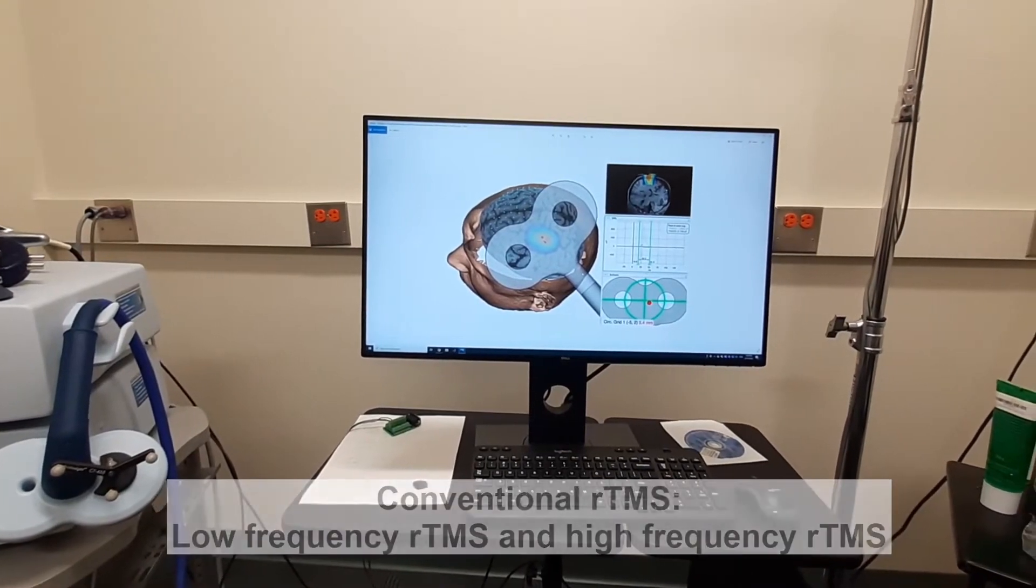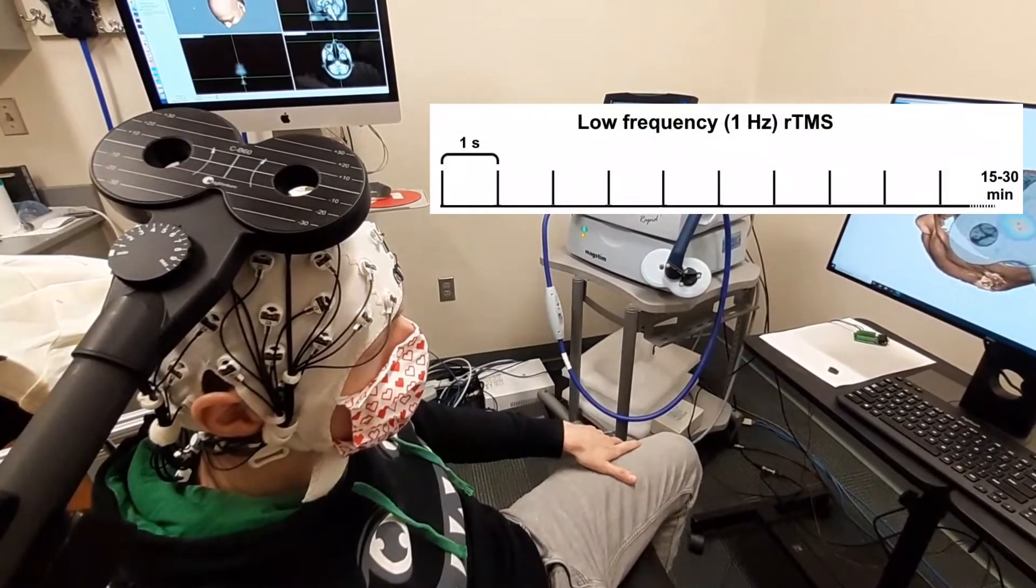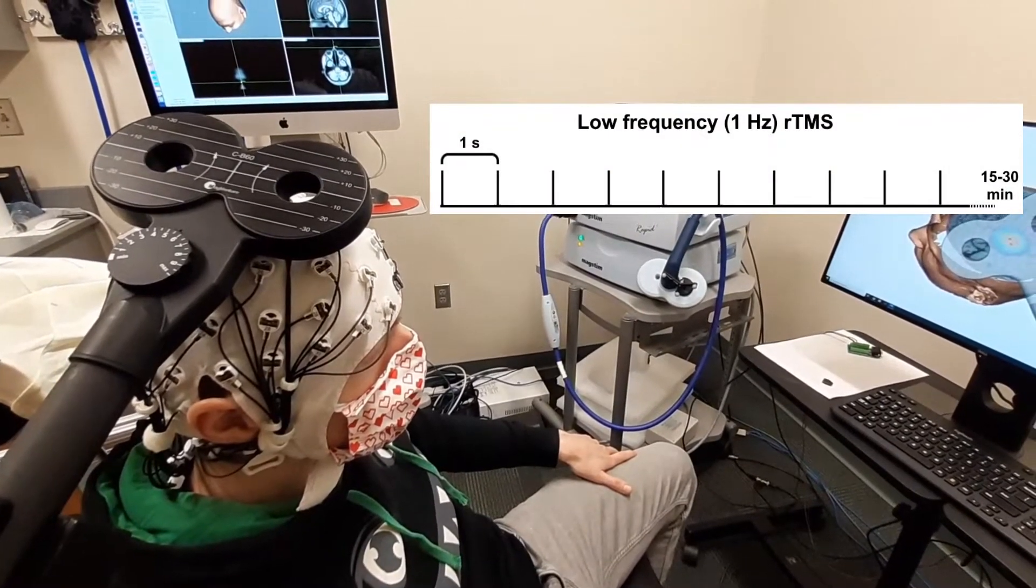During low-frequency RTMS, stimulation is given at a low frequency, typically about one pulse per second, and this is done for anywhere between 15 and 30 minutes.